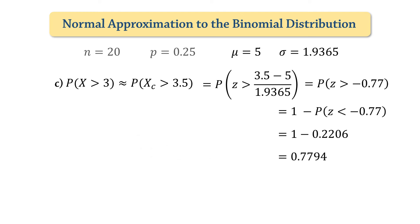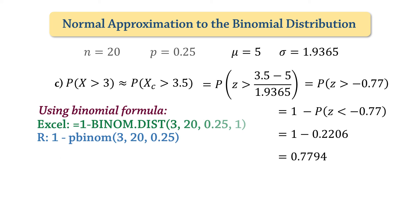Using the binomial distribution formula, the probability that x is greater than 3 is 0.7748, which is very close to the approximation.